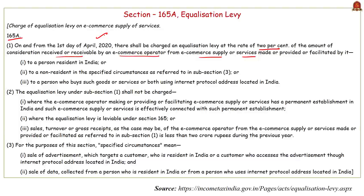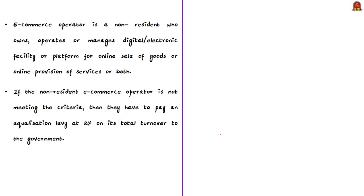An e-commerce operator is a non-resident who owns, operates, or manages a digital or electronic facility or platform for online sale of goods, online provision of services, or both. Such levy shall not be charged if the e-commerce operator has a permanent establishment in India and the e-commerce supply or service is effectively connected to it, or if the levy is already charged under Section 165, or if the sales, turnover, or gross receipts of the e-commerce operator from e-commerce supply or services is less than ₹2 crores during the previous year. Otherwise, they must pay an equalization levy at 2% of total turnover. Any income covered by this levy will now be exempt from taxation under the Income Tax Act of 1961.